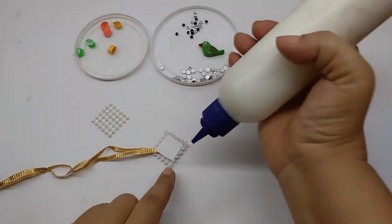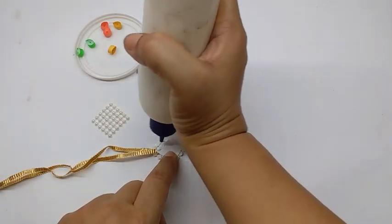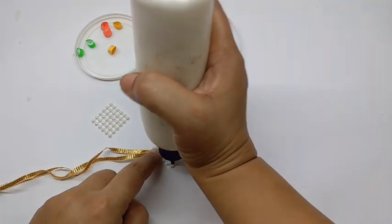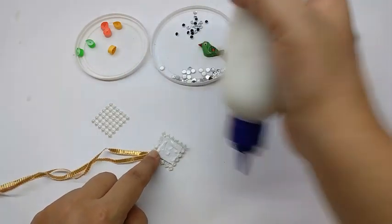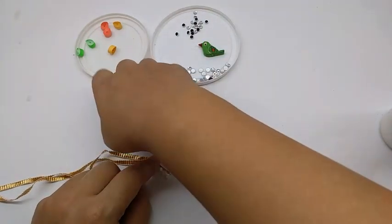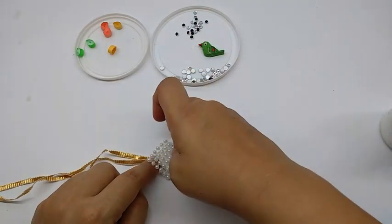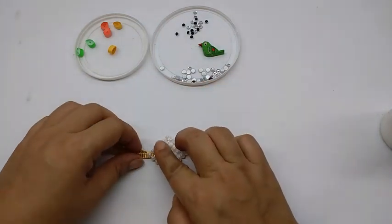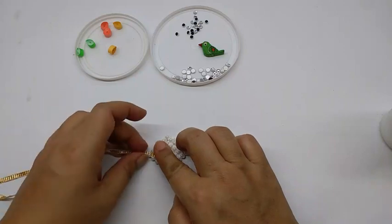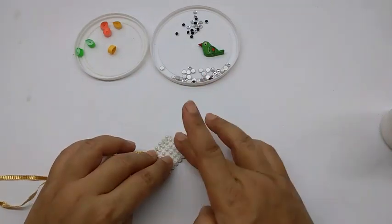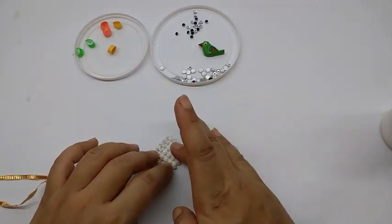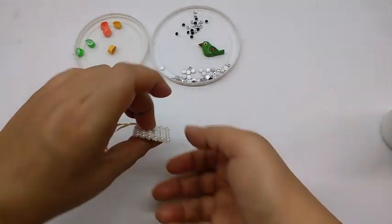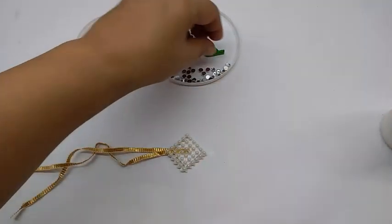Now apply glue on the reverse, on the paper as well as these pearls. Since the loomba can be seen from both sides, that is why you need to do this. And you stick this other square on it.